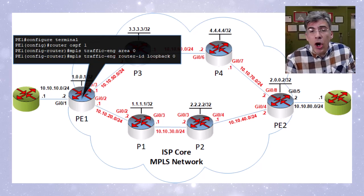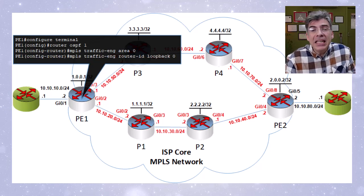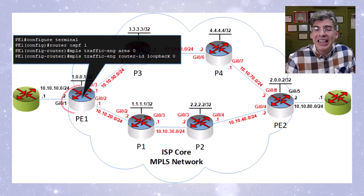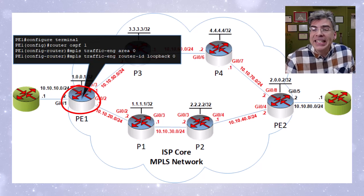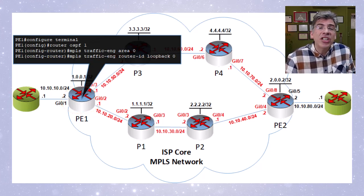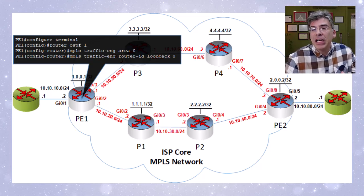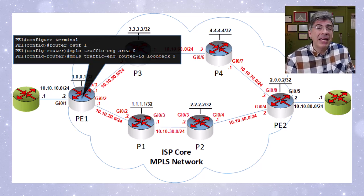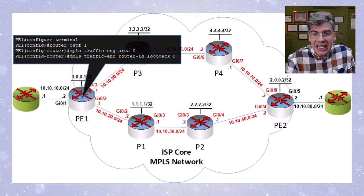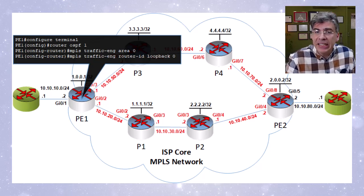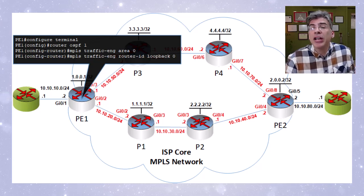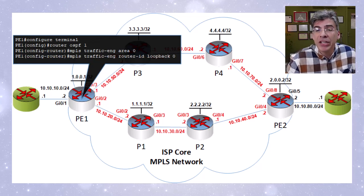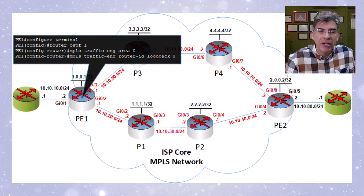Just like the regular OSPF router ID, the OSPF TE router ID is used by the traffic engineering components of OSPF to uniquely identify this router. It's a different entity than the regular OSPF router ID, but it essentially serves the same purpose within the traffic engineering domain. Within the traffic engineering database — the TED — used by OSPF TE, it is the OSPF TE router ID that we will see. These commands are issued on all OSPF routers, each using its loopback zero IP address.